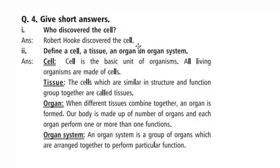Question number two: define a cell, a tissue, an organ, and an organ system. Cell — a cell is the basic unit of an organism. All living organisms are made up of cells. The cell is the basic unit, meaning the fundamental unit of the body of living organisms.